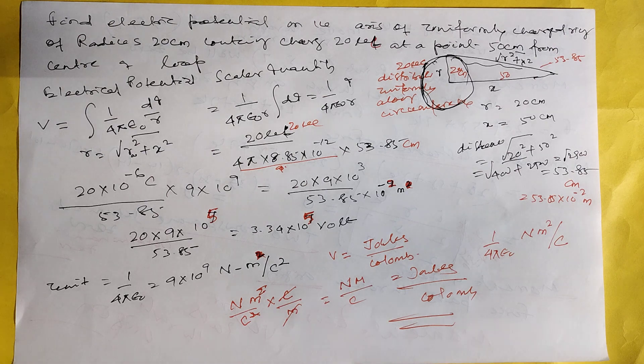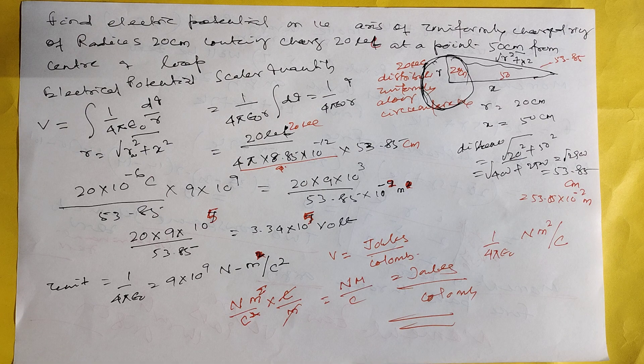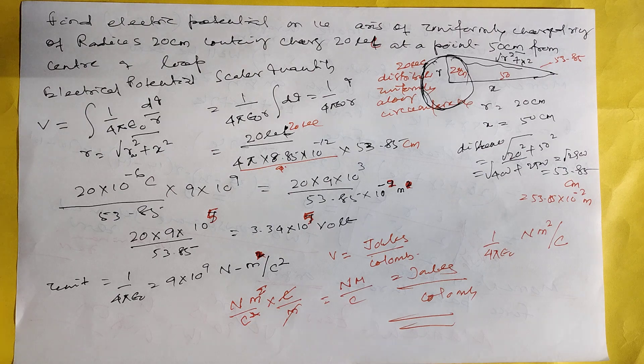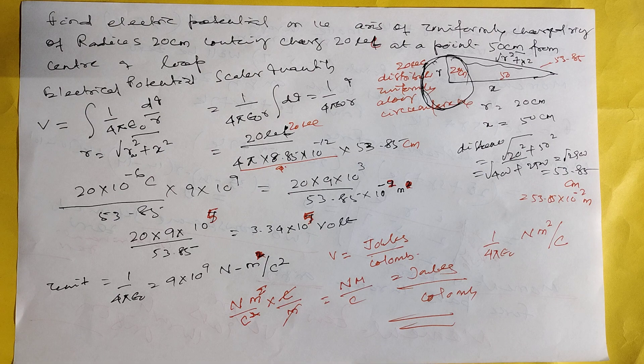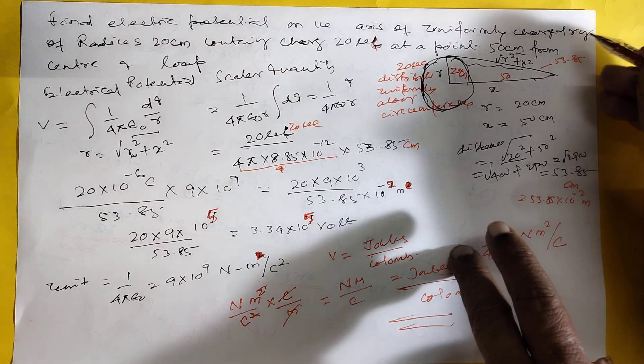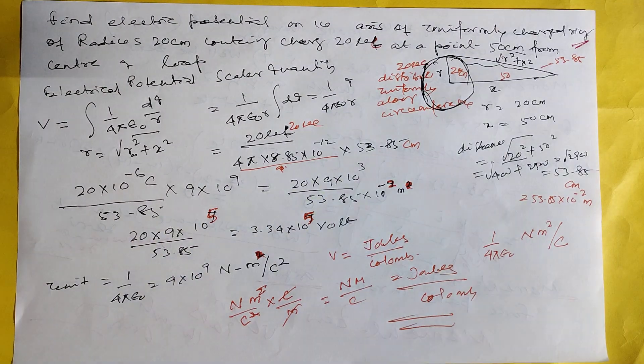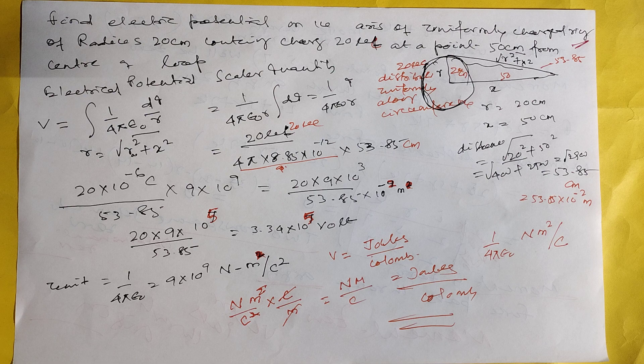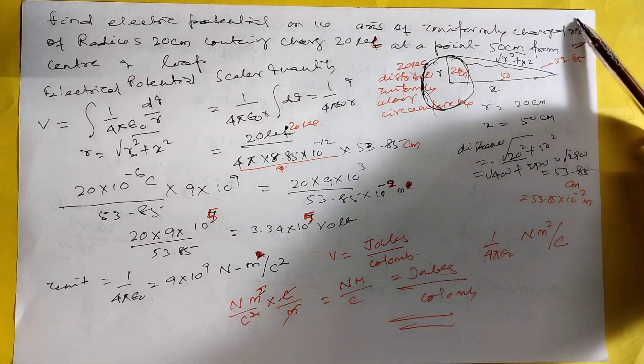Here find the electric potential on the axis of a uniformly charging ring. The most important here: ring. This is a ring, not disc. Because the formula for ring and disc are different.